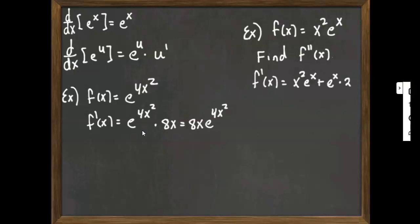So f prime by the product rule would be the first, x squared, times the derivative of e to the x. So that would just be e to the x. Plus the second, e to the x, times the derivative of x squared. Now that answer is perfectly fine for the first derivative.